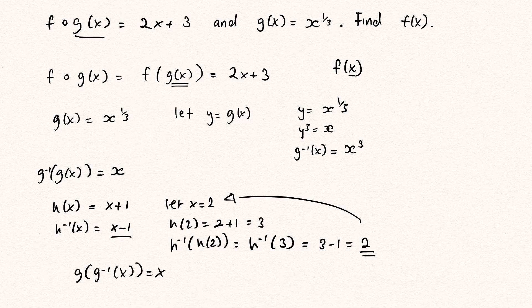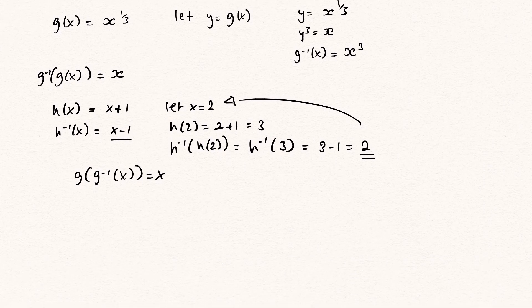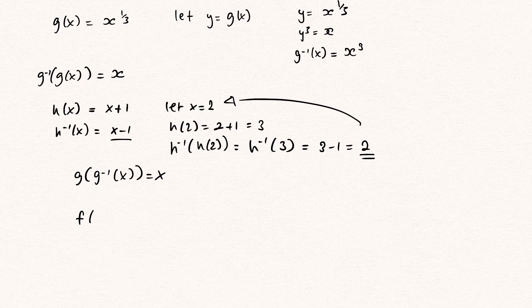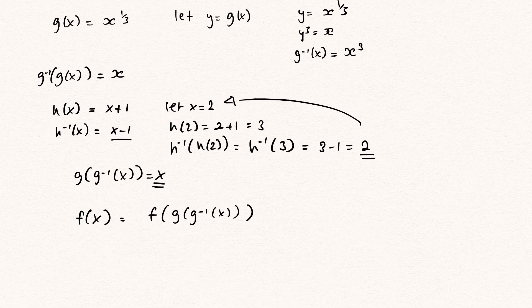Okay. Well, that means, if I scroll down a bit, that if I have f of x, I can just substitute this. I can say this is equal to f of g of g^(-1) of x. Because we said that x equals g of g^(-1) of x, so I can just substitute it in there.